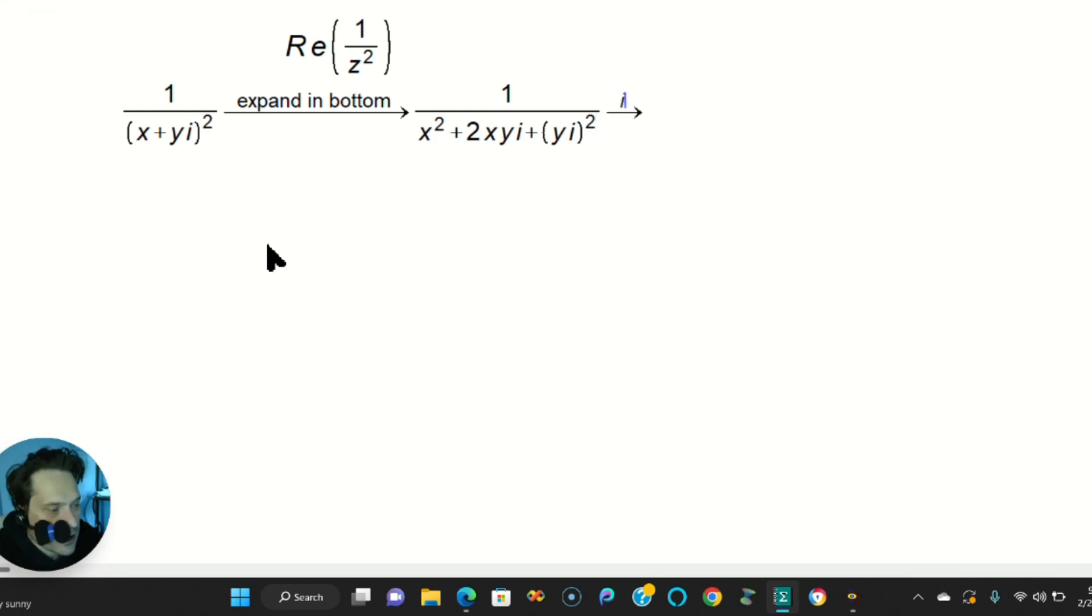Now what you want to do is apply this fact. Remember that i squared is equal to negative 1. So you go through that. 1 equals x squared plus 2xyi and then plus y squared. And you replace i. It's really i squared over here when you distribute the 2 over. So it's going to be like negative 1 at this stage.